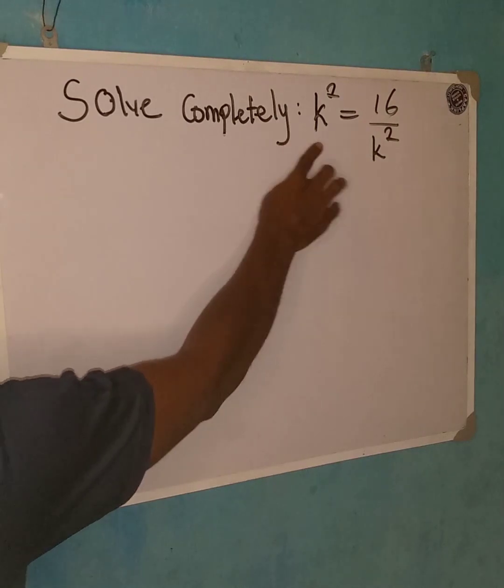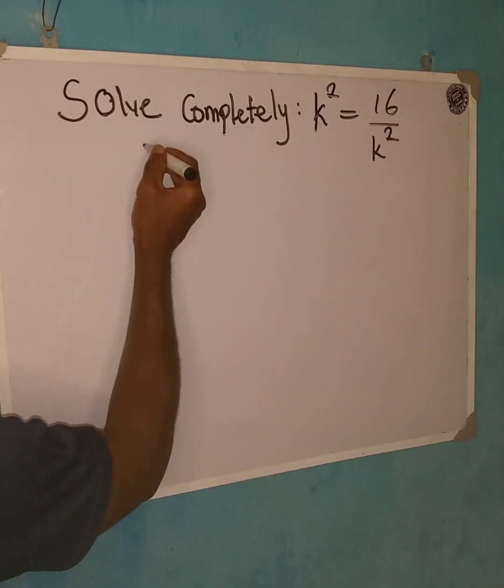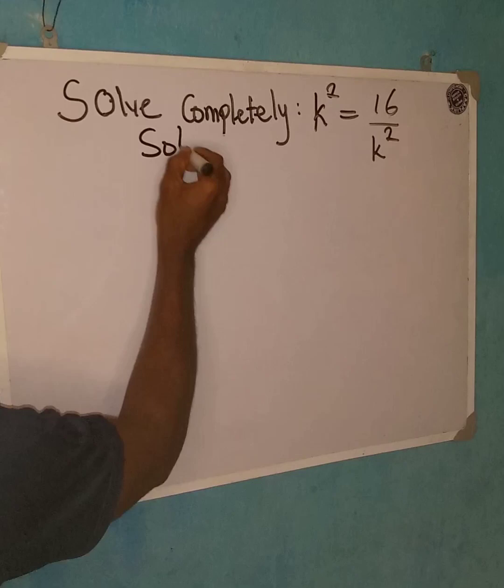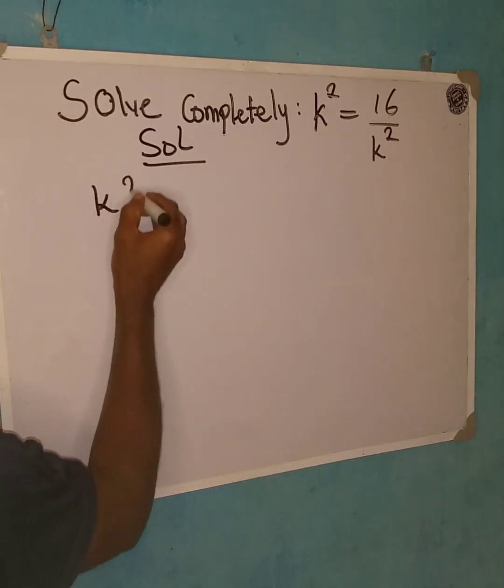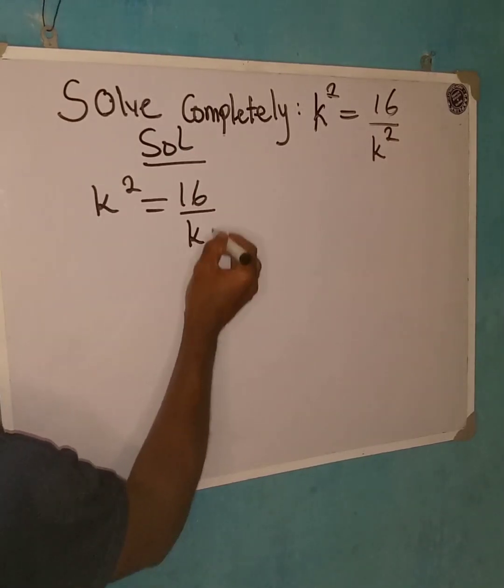So we have k squared equal to 16 over k squared. Solution: we have k squared equal to 16 over k squared.